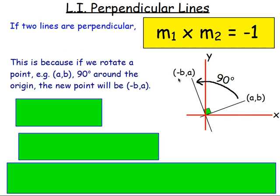Here's more of an explanation of where that comes from. Imagine you had a point — let's say this is the point A, B, just on the very end of this line. If you were to rotate that 90 degrees about the origin, the point would then become negative B, A. You can try this yourself on square paper: take a point, rotate it through 90 degrees, and you get negative B, A.